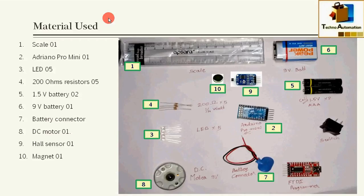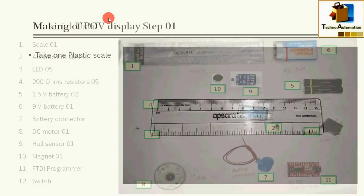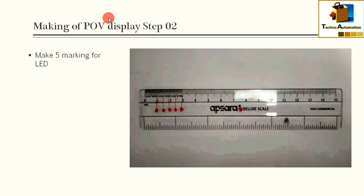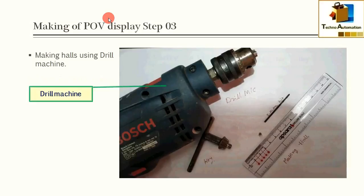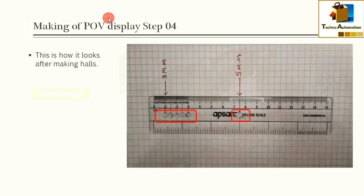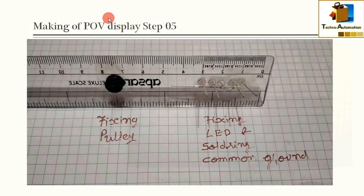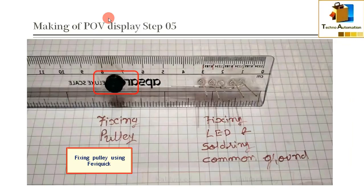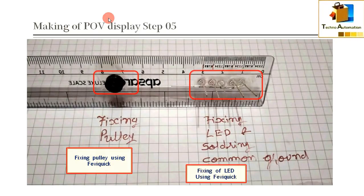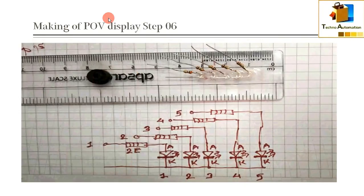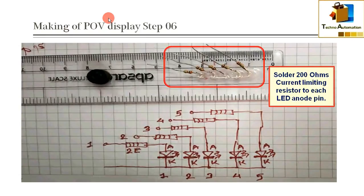First of all, I take one plastic scale, then make five markings for LED and one marking for motor pulley, then make holes using drill machine. After making all holes for LED and pulley, I'm fixing a pulley using fabric wick and fixing LEDs using fabric wick. Then I have soldered 200 ohm resistors for current limiting on each LED anode pin.